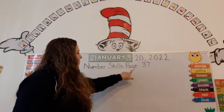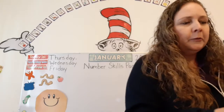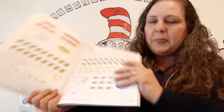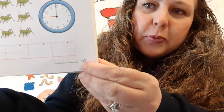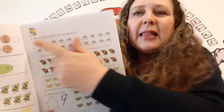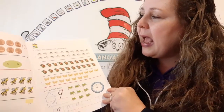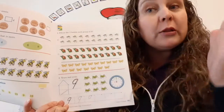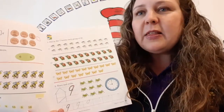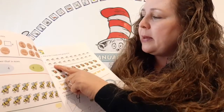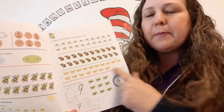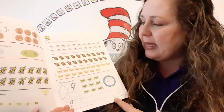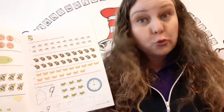Here it says number skills, page 37. Let's get our number skills and open up to page 37 — thirty-seven ones. Make sure to write your name at the top of the page. Fill in the circle beside each group of 20. Only if there's 20, we fill in the circle, so you need to count. There's the mosquitoes, the ladybugs, and the butterflies. Which group of insects have 20? You can do it, because you know how to count up to 20, of course.